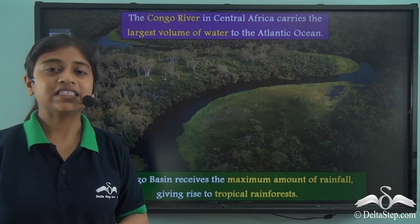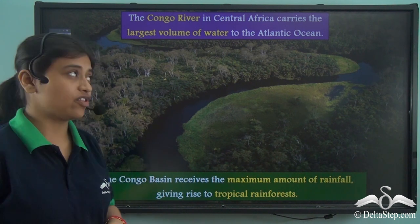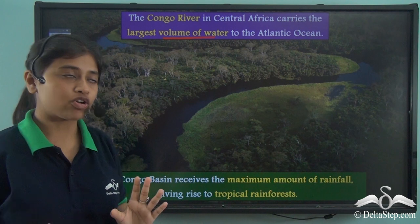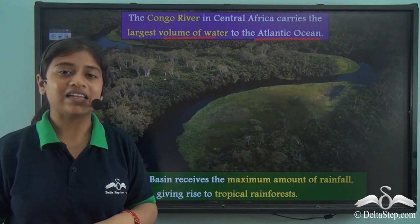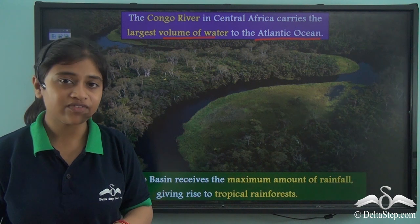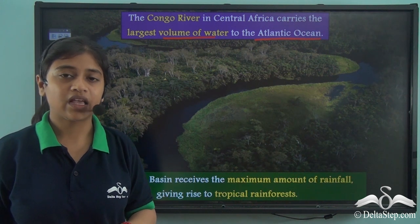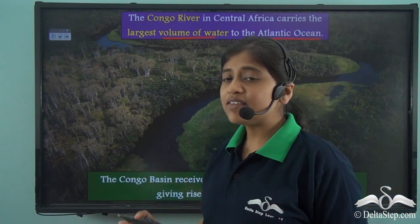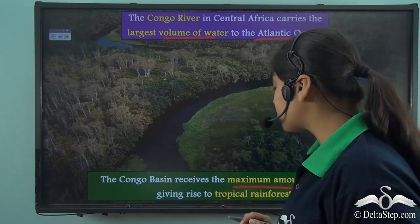The Congo Basin is majorly drained by the Congo River. The Congo River, which lies in central Africa and drains the Congo Basin, is the second longest river of Africa. It carries the largest amount of water into the Atlantic Ocean. Since the Congo Basin falls in the equatorial region, it receives maximum rainfall, giving rise to tropical rainforests.